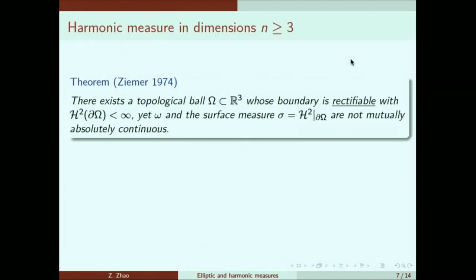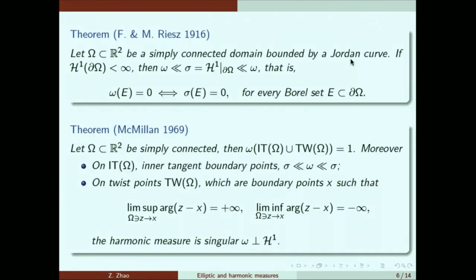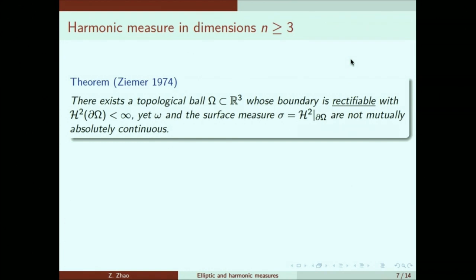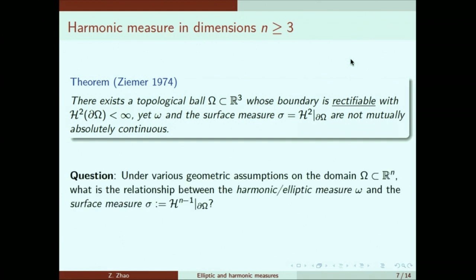In higher dimensions, the analog of the previous Riesz theorem is not true. There exists a topological ball whose boundary is rectifiable and has finite surface area. However, the harmonic measure and the surface measure are not absolutely continuous with each other. By rectifiable, it just means the boundary can be considered as a countable union of C1 submanifold modulo set of measure zero. That just means we need more geometric assumptions to guarantee nice behavior of harmonic measure in higher dimensions. A broad question would be, what are the minimum geometric assumptions to guarantee nice behavior of the harmonic or elliptic measures?